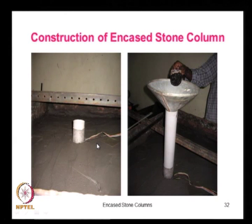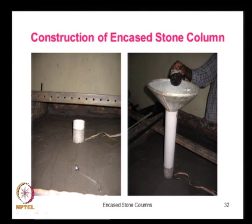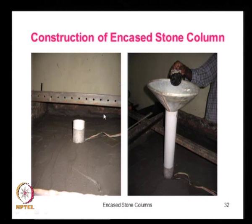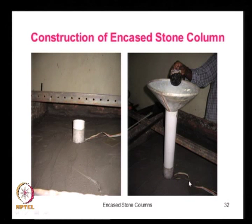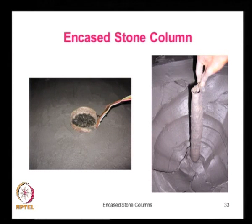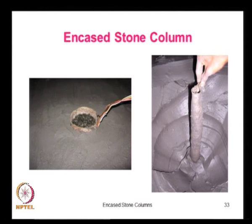Now I will show some experimental data from IIT Madras on the strength and stiffness of encased stone columns. Here we see an example of an extremely soft clay formed inside a large steel tank — so soft that if you stand on it, you will sink up to your waist. We have the geosynthetic-encased column charged with stone aggregate, with wires connected to strain gauges fixed on the geosynthetic. After the test was over, we exhumed the stone columns to examine the diameter and other response features.